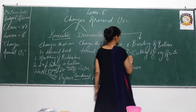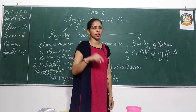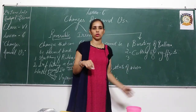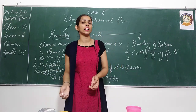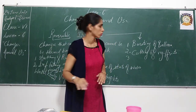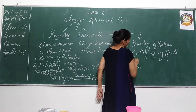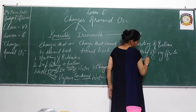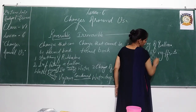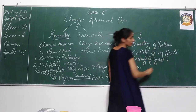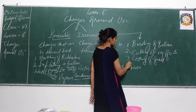Now the third, suppose your mother cooks in the kitchen — whatever she is cooking, can you change it back into the raw material? No, that's not possible. So we will say that cooking of food is also an example of irreversible change.